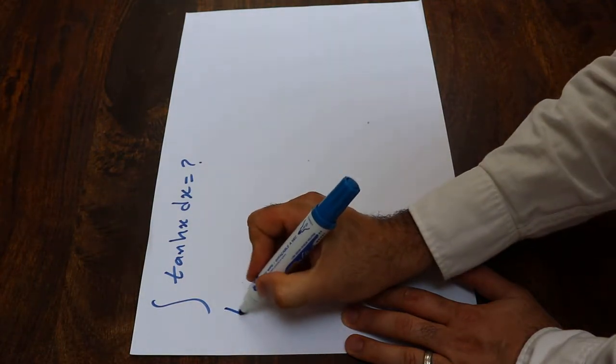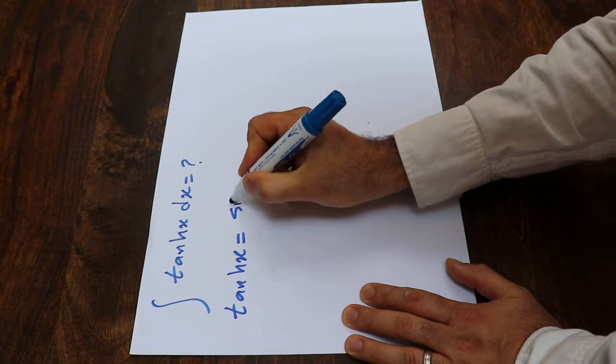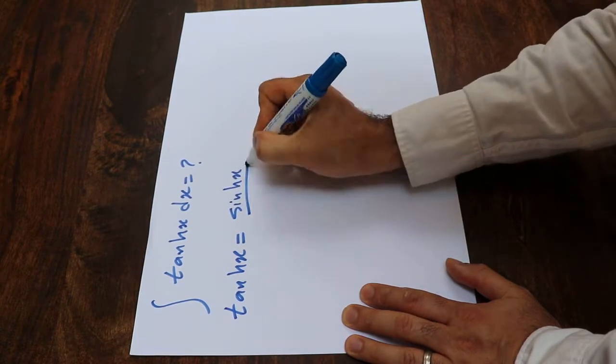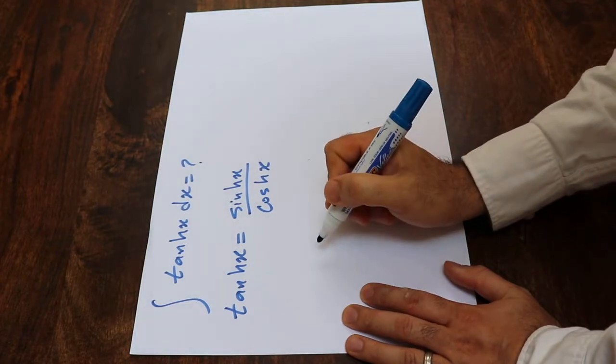We know that the hyperbolic tangent x is defined as hyperbolic sine x divided by hyperbolic cosine x.